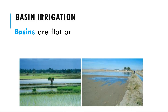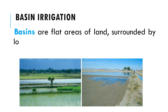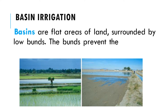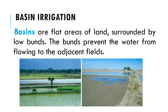Basins are flat areas of land surrounded by low bunds. The bunds prevent the water from flowing to adjacent fields. Basin irrigation is commonly used for rice and paddy grown on flat lands or in terraces on hillsides. Trees, for example citrus and banana, can also be grown in basins, where one tree is usually located in the middle of a small basin.